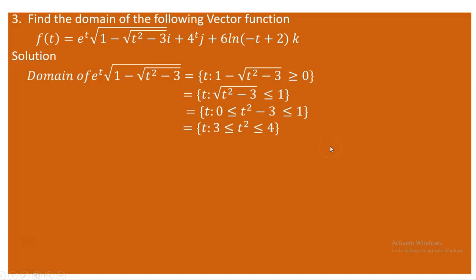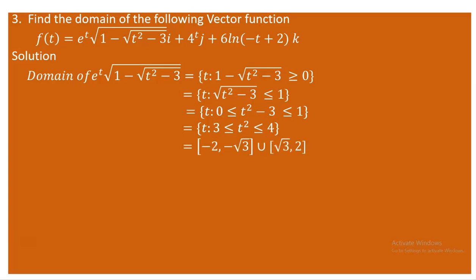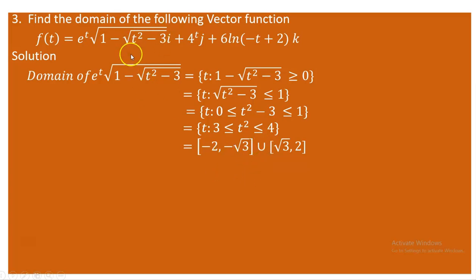Adding 3 throughout gives 3 ≤ t² ≤ 4. Taking square roots and including negatives: √3 ≤ |t| ≤ 2, which means t ∈ [-2, -√3] ∪ [√3, 2]. The exponential e^t has domain all real numbers, so we only focus on the radical restriction.